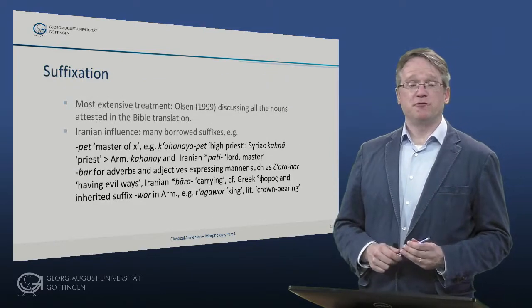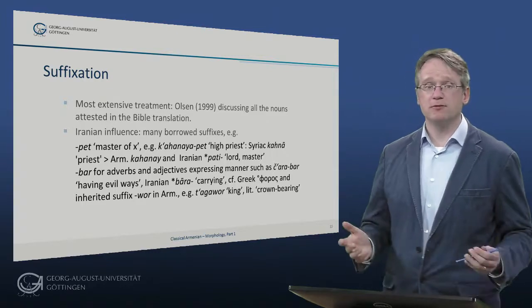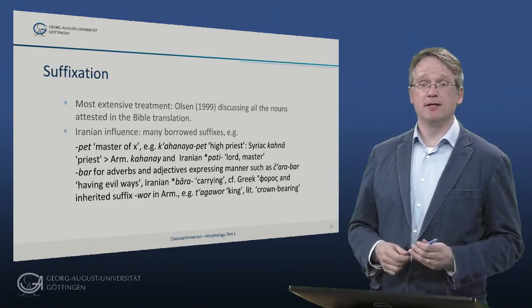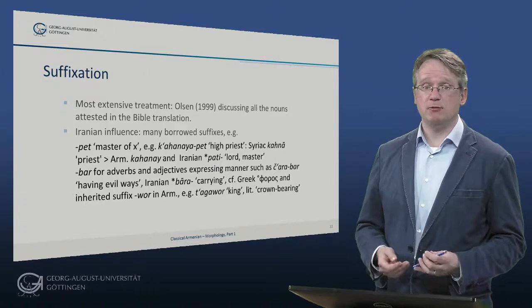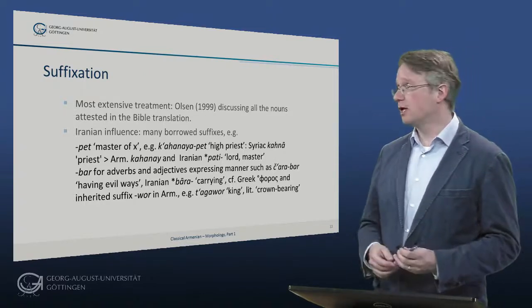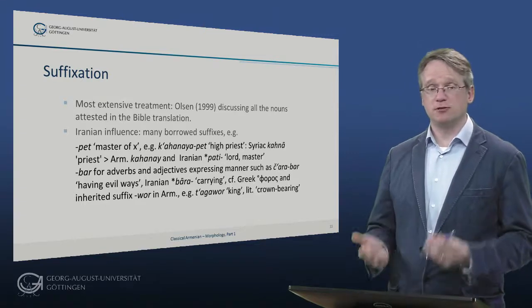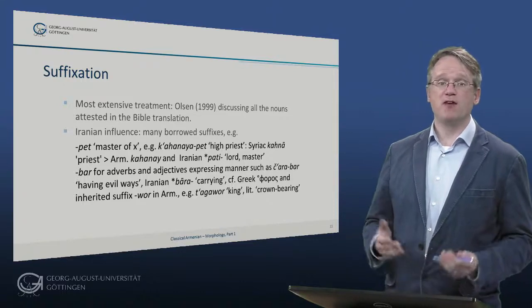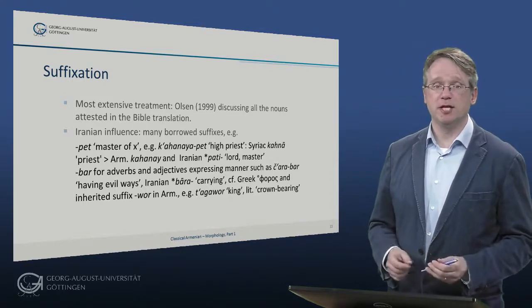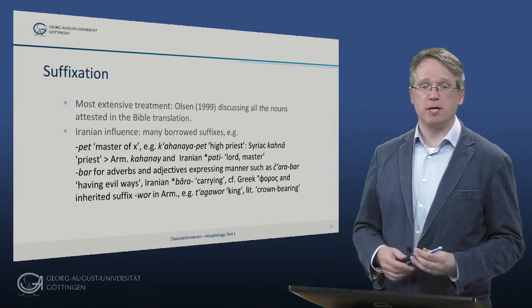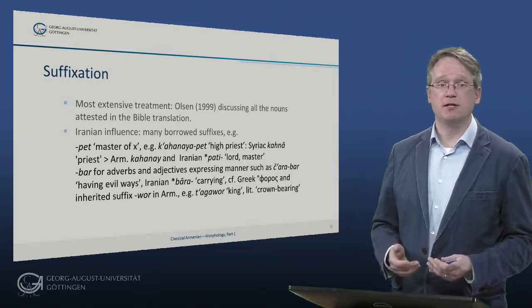The most productive process for forming new words is suffixation in Armenian, with an extensive treatment for Classical Armenian covering all nouns attested in the Bible translation. The Iranian influence is noticeable in nominal derivation, with many suffixes borrowed from Iranian languages, such as peit – master of something – as in kakhana ya peit – the high priest – which is a Syriac loanword kakhna with the Iranian word pati – lord, master. Or bar, forming adverbs and adjectives expressing manner, such as charabar – having evil ways – from Iranian bara – carrying – comparable to Greek phoros compounds. Beside this borrowed form, the inherited suffix vor also continues, in nouns such as tagavor – the king, literally crown-bearing.